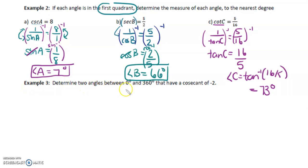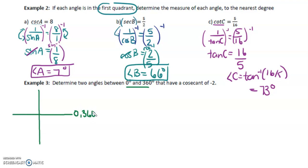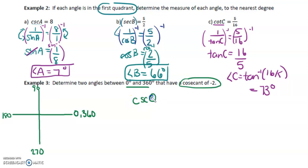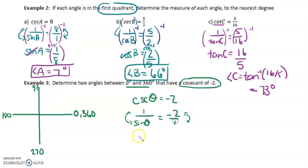Example three: determine two angles between zero and 360 that have a cosecant of negative two. We're considering one full rotation of the circle, from zero to 360, with 90, 180, and 270 marked. Since we can't work with cosecant, rewrite it: one over sine theta equals negative two. Taking the reciprocal of each side, sine theta equals negative one over two.